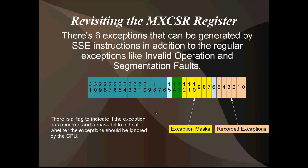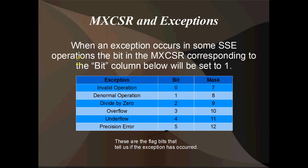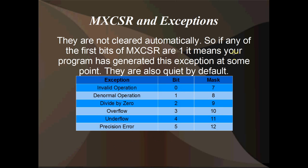There's a flag to indicate if an exception has occurred, and a mask bit to indicate whether the exception should be ignored by the CPU or should be noisy. These first bits, 0 through 5, are the flag bits on the right-hand side, and the mask bits, 7 through 12, are in the second column. When an exception occurs in some SSE operation, the bit in the MXCSR register will be set to 1. They're not cleared automatically either — they're what's called sticky. They'll stay as 1 until you reset them back to 0 manually. If one of those bits is 1, it means that at some point previous to your checking it, the exception was caused.